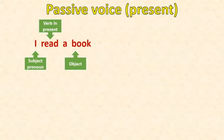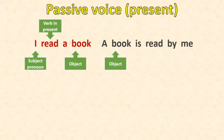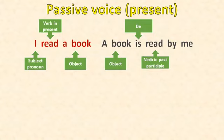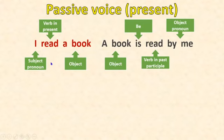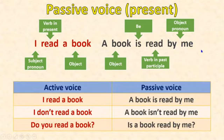Now in passive voice: object — 'a book' — then the verb 'be': is it singular ('is') or plural ('are')? Then the verb in past participle, and finally the object pronoun. The object pronoun receives the action.